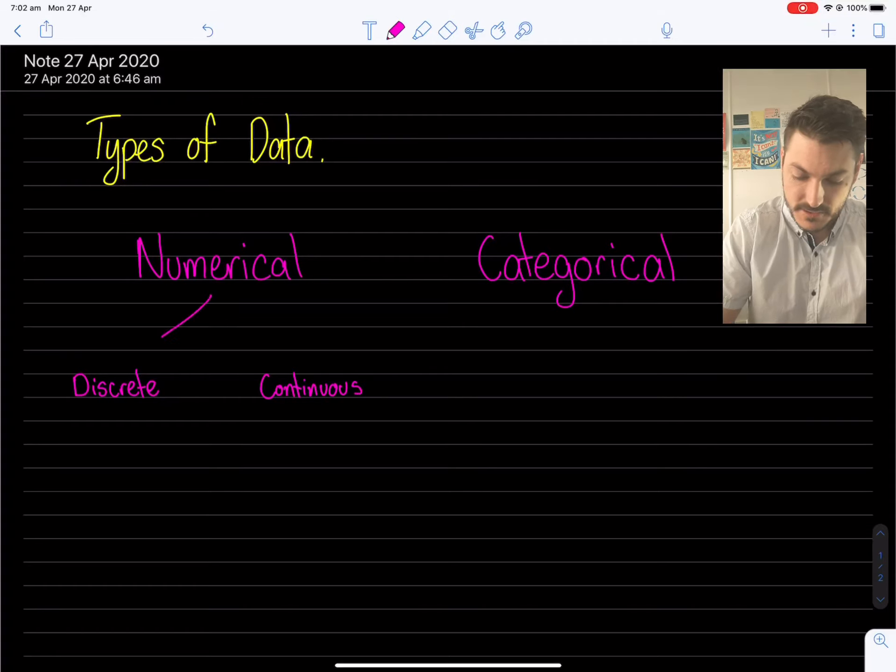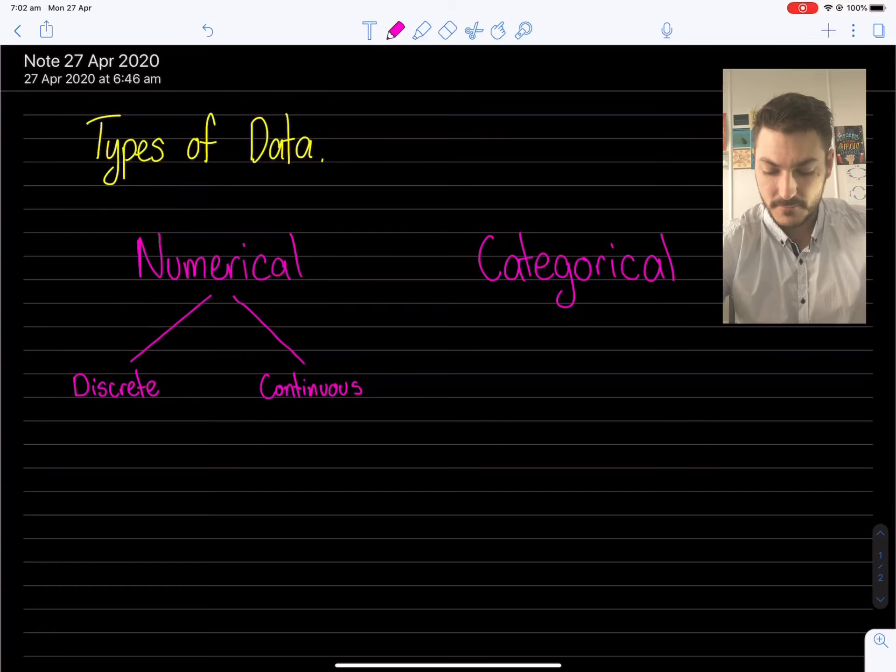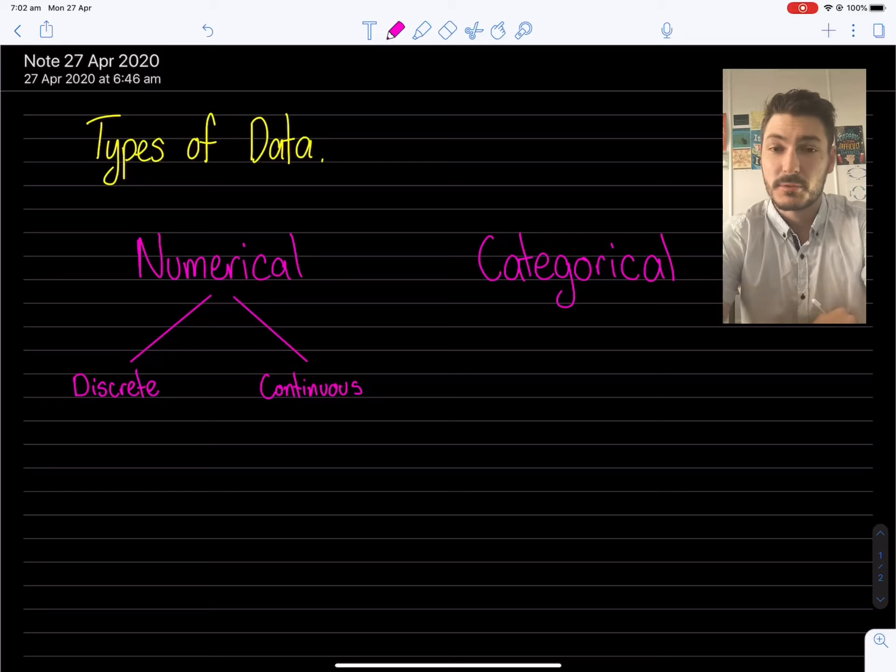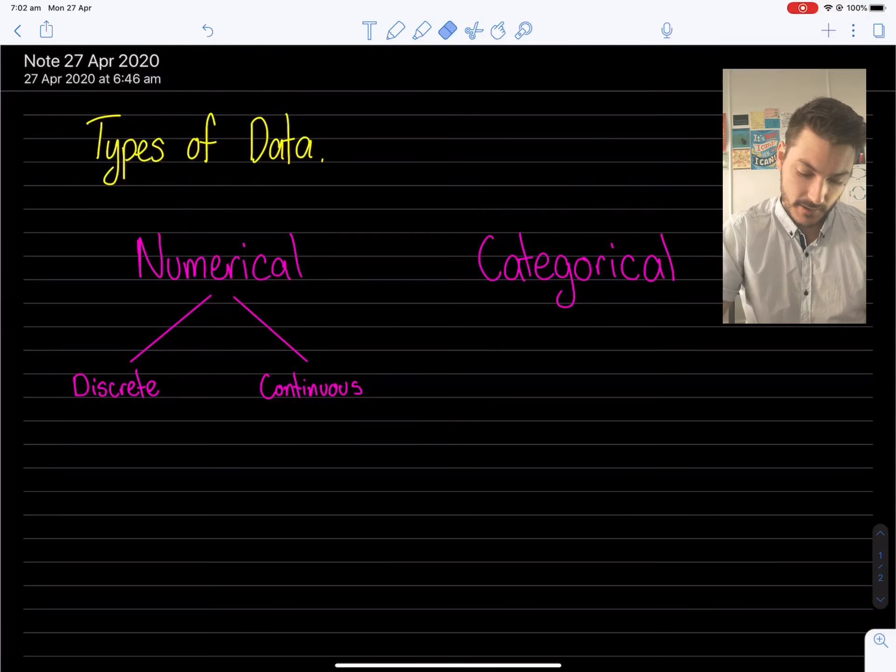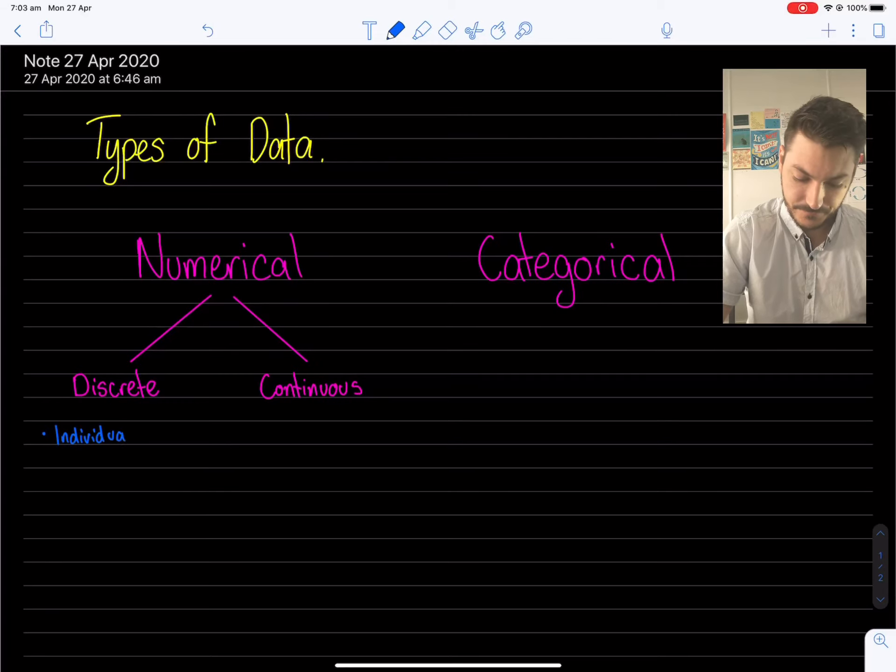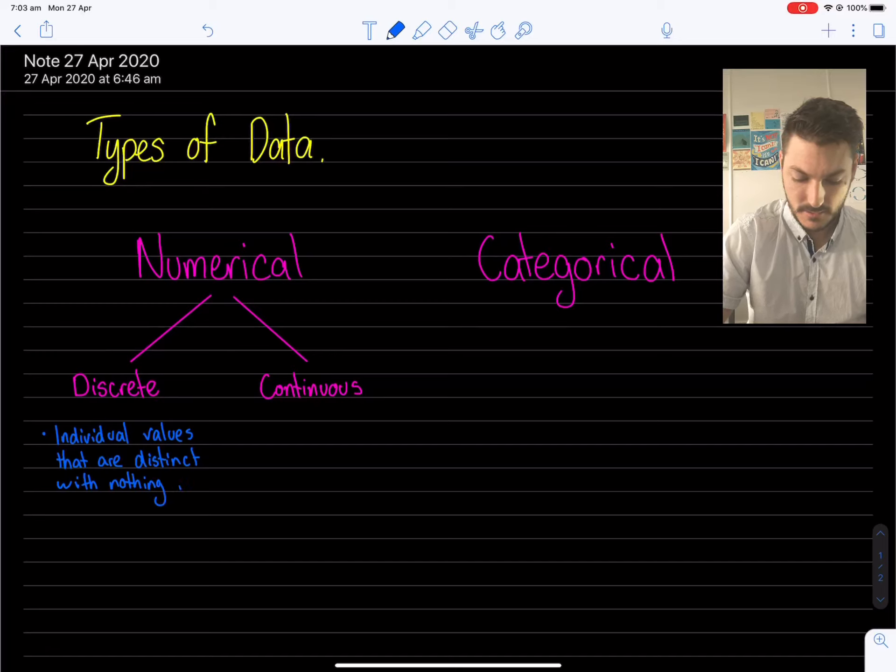So discrete data is one and continuous data is the other. And this is probably one of the more challenging differentiations to make. Discrete data, though, is data which is going to be made up of individual values and there's nothing in between them. So I might even write this down. Individual values that are distinct